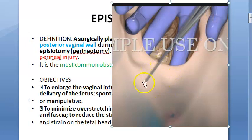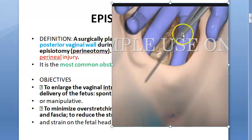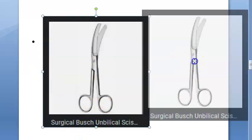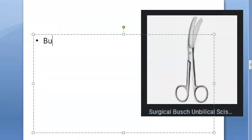As shown in this photo, they are doing a mediolateral episiotomy, taking the scissors — it has a special name. It is spelled B-U-S-C-H, 'Busch scissors'.